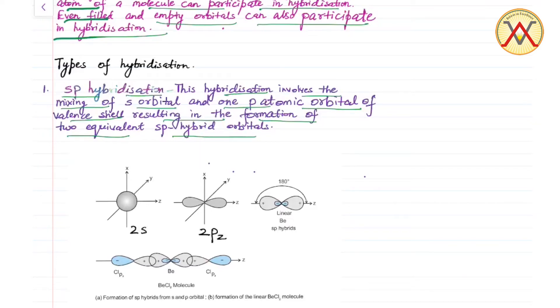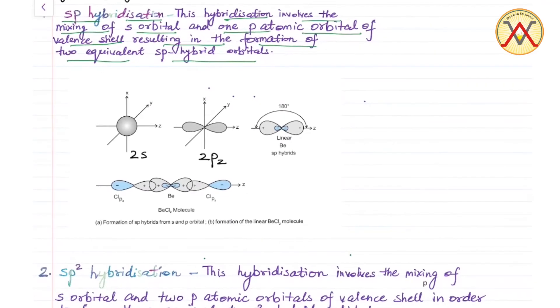Each sp hybrid orbital has 50% s character and 50% p character. Example: BeCl2 molecule. BeCl2 has linear geometry.